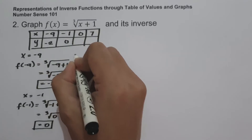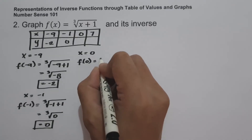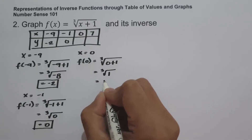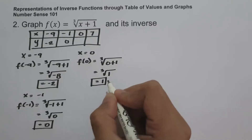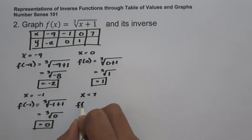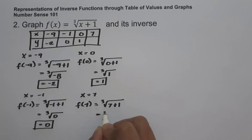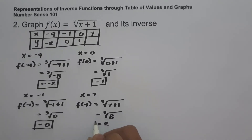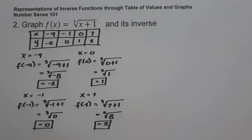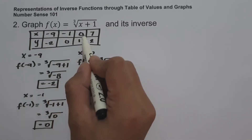For x equals 0: f of 0 equals the cube root of 0 plus 1. Zero plus 1 is 1, and the cube root of 1 is 1. For x equals 7: f of 7 equals the cube root of 7 plus 1, which is 8, and the cube root of 8 is 2. So the set of ordered pairs in the given function is: negative 9 and negative 2, negative 1 and 0, 0 and 1, and 7 and 2.